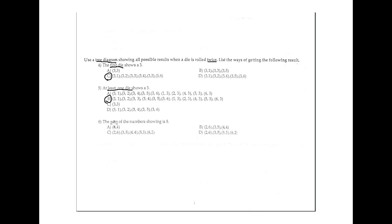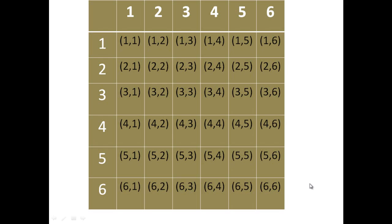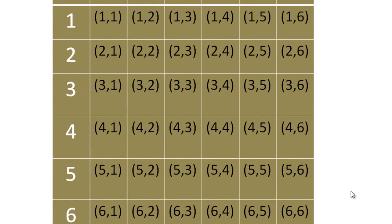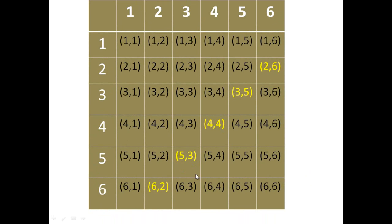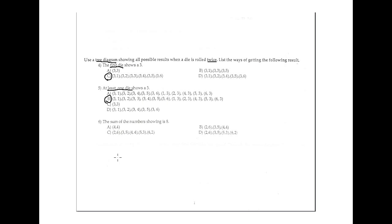Number 6: the sum of the numbers shown is 8. Using the product table again, we find which combinations add up to 8: (2,6), (3,5), (4,4), (5,3), and (6,2). That gives 5 combinations. The final answer for question 6 is option C: 5 combinations.